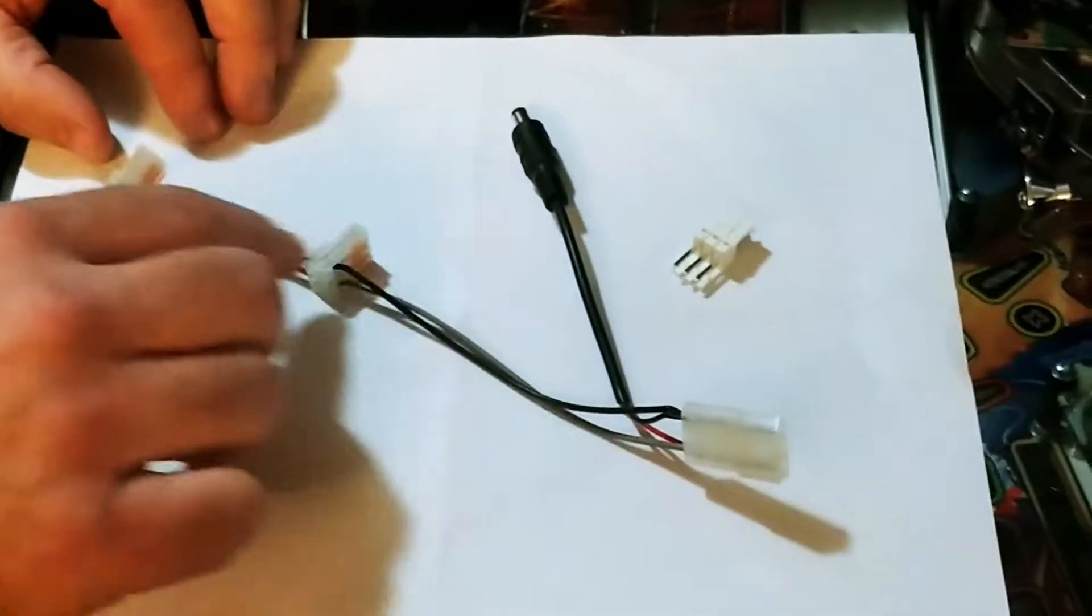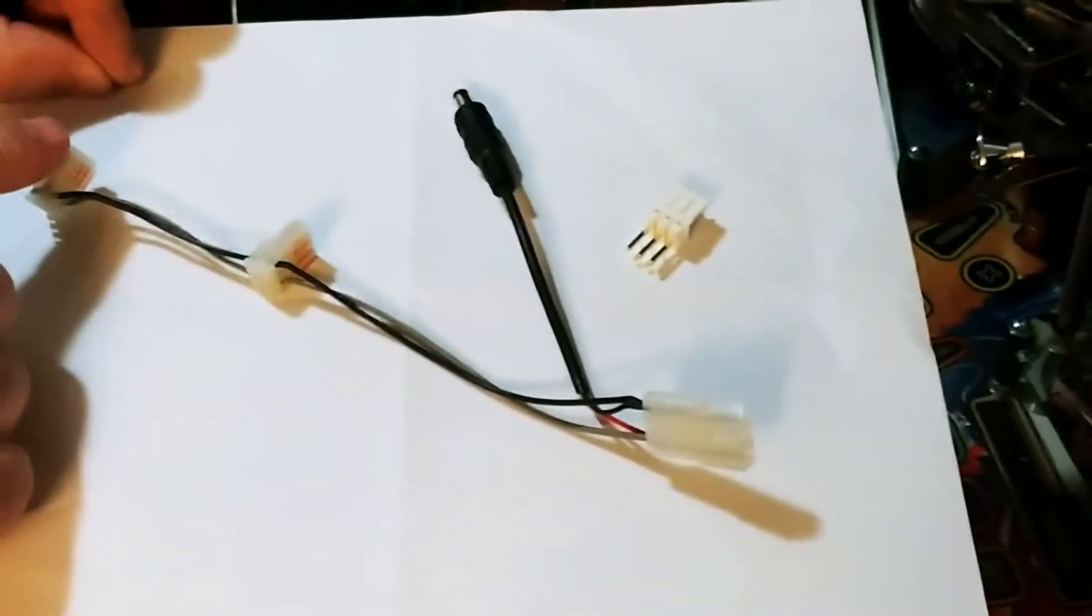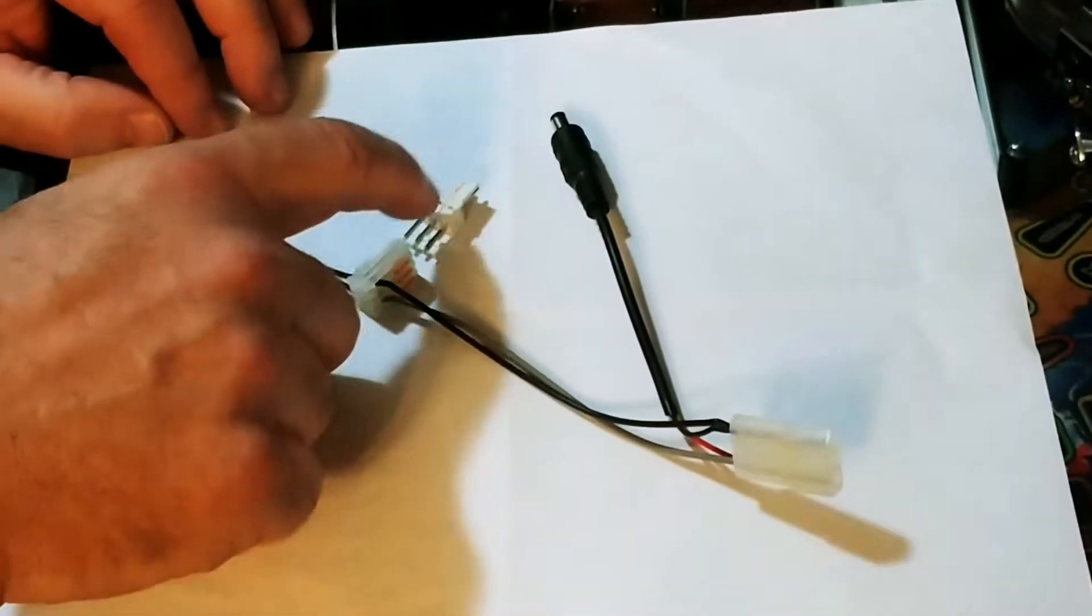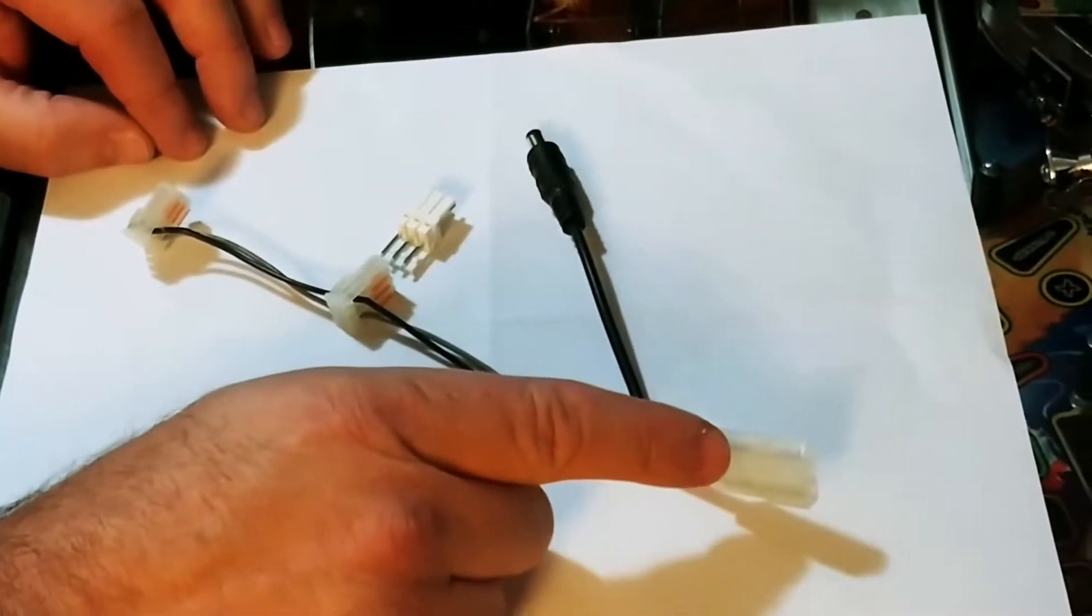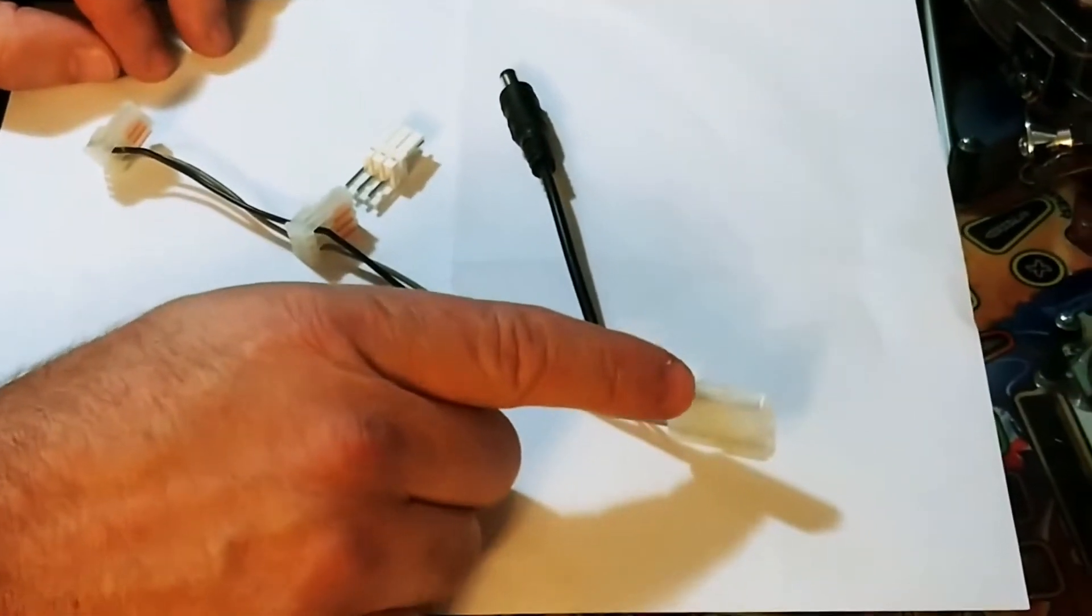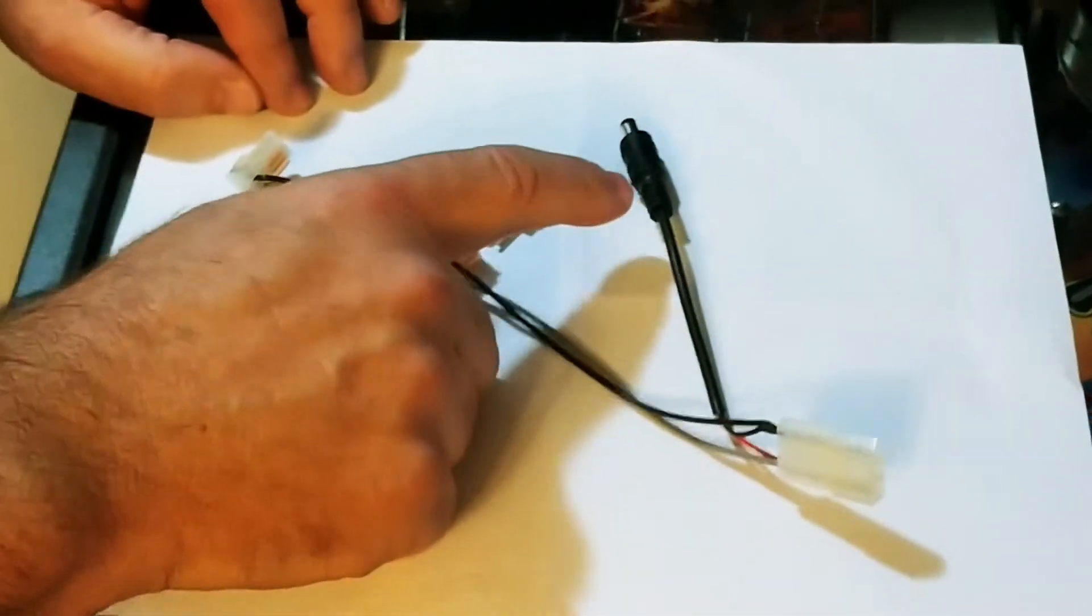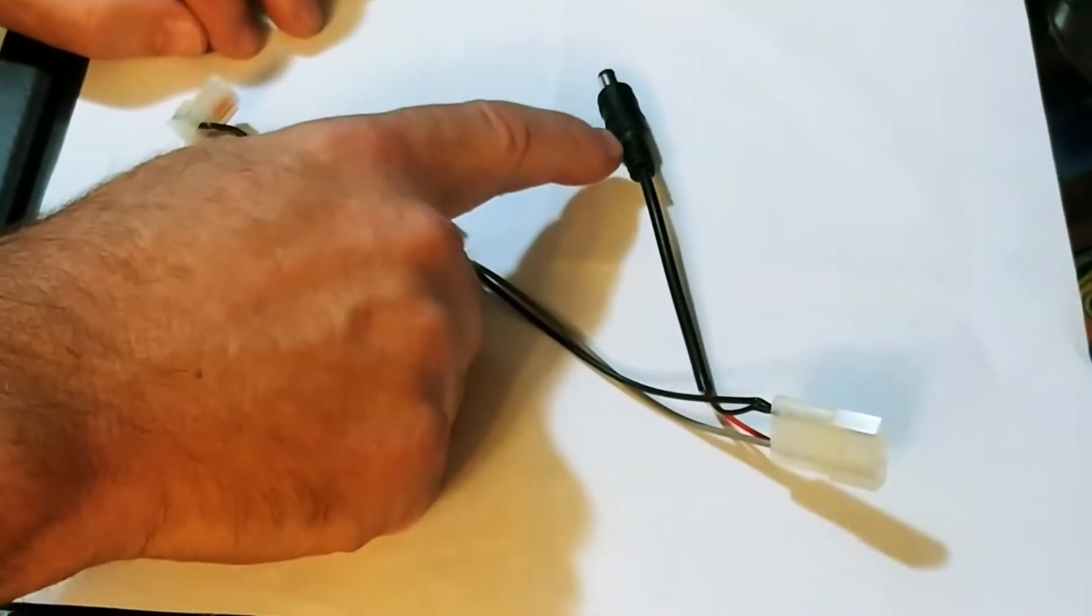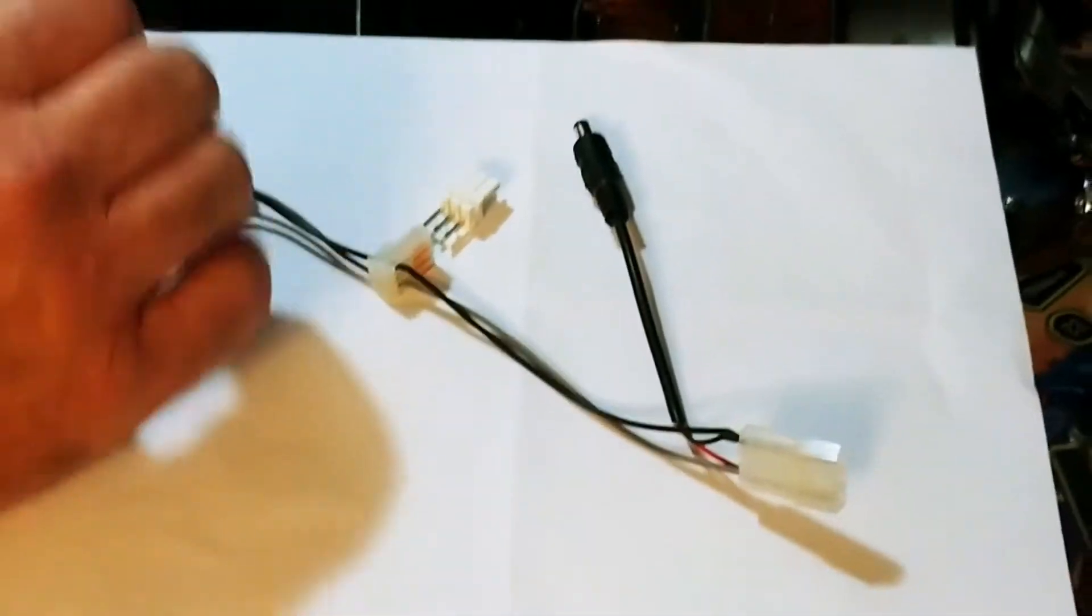This is the Power Tap that will give you 12V off of a Stern game. This is going to plug into your game. If you have an existing mod that you have plugged in there now, this will hook up to your existing mod. We also include a Molex, which is standard on many Stern game mods. We're going to mainly be using this 5.5mm and 2.1mm round plug, which is standard for 12V. A lot of LED applications use that.